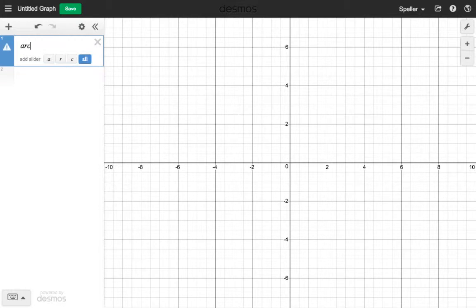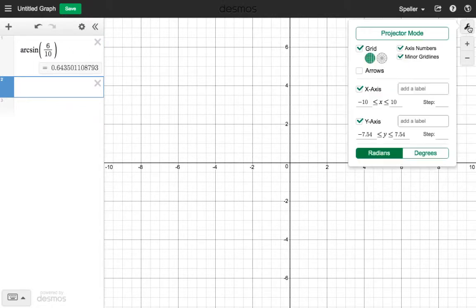Here in Desmos, let's type in arc sine, and the fraction that we had was six tenths. Alright, we're coming with this decimal answer here, but let's make sure that we're in degrees. We're not, we're in radians. We'll switch to degrees and we see that that's actually 36.9 degrees.